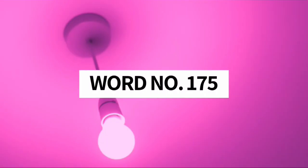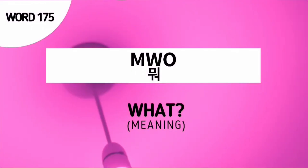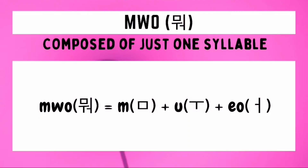Word number 175. The word is 뭐 (Bo or Mo). Sometimes this is pronounced as an abrupt Bo. The meaning of the word Mo or Bo is 'what' — used to ask or to form interrogative sentences. To write the word, we draw a Miu character followed by a U character followed by an O character. The WO sound is formed by the combination of the O and O sound, which we combine to form the Hangul of the word Bo.